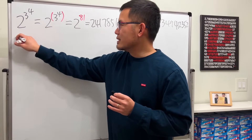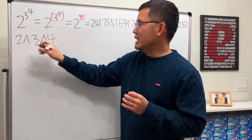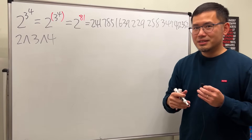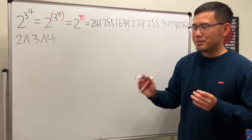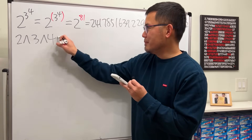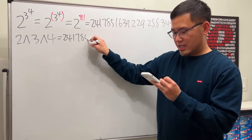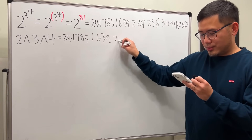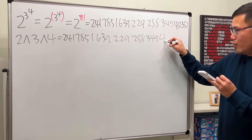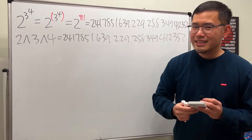Now if you enter 2 to the power of 3 to the power of 4 into computer software, you will still end up with the same answer: 2, 4, 1, 7, 8, 5, 1, 6, 3, 9, 2, 2, 9, 2, 5, 8, 3, 4, 9, 4, 1, 2, 3, 5, 2. So yes, it works out the same.